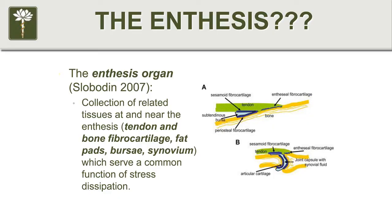Here's a diagram of the enthesis — two different diagrams here. This is a simple tendon attachment, for example a tendon in your shoulder attaching to the bone. Here's the tendon, it attaches to the bone, and then you've got the little bursa right here. This whole zone is the enthesis: the tendon and bursal attachment to the bone.